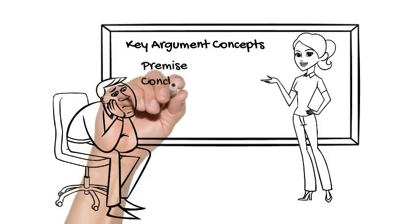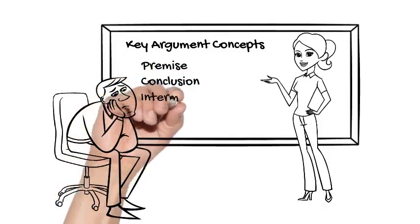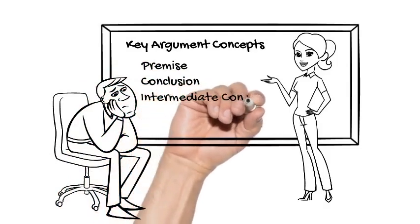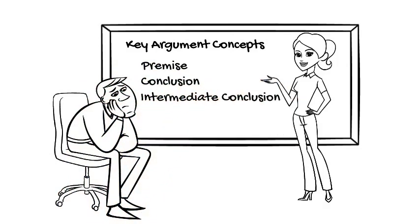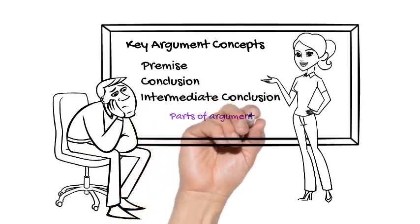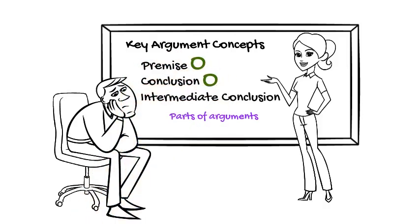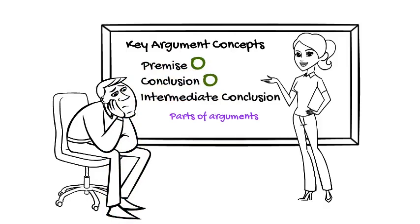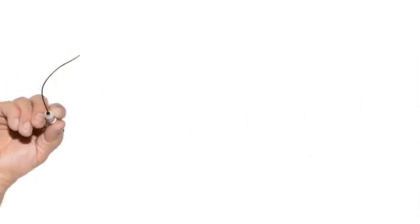The next three argument concepts that we need to introduce are the concepts of a premise, a conclusion, and an intermediate conclusion. What these three concepts have in common is that they are all parts of an argument. The most important parts of an argument are the concepts of a premise and a conclusion. We're going to focus on these two concepts and what follows. Intermediate conclusions are a topic we're going to take up in a later video.